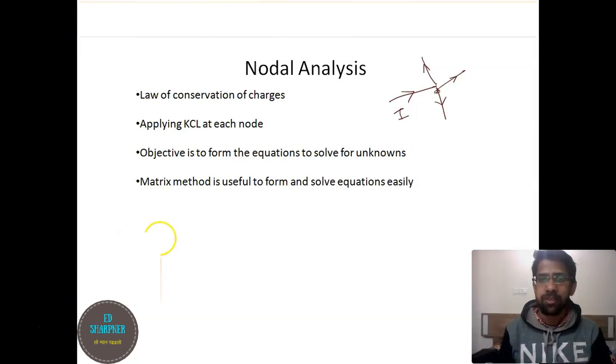First we have to assume a particular sign or polarity of the current direction. If we assume that the currents coming towards the node are positive, so here if we have i1, i2, i3...